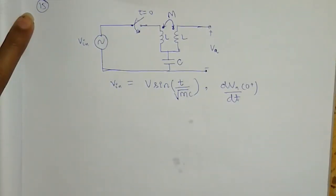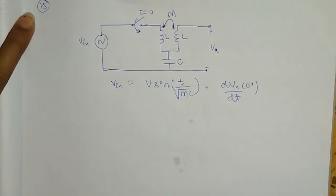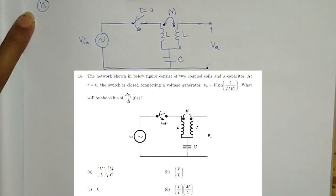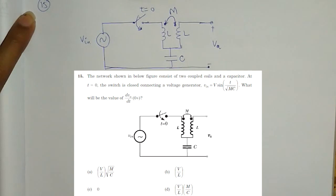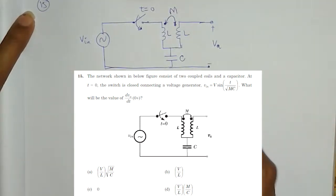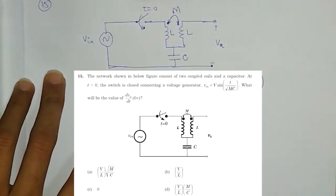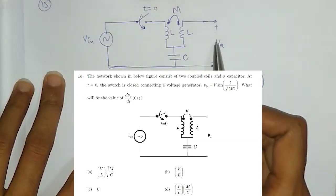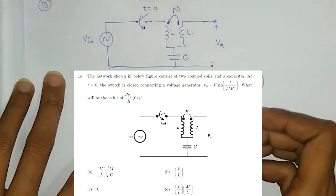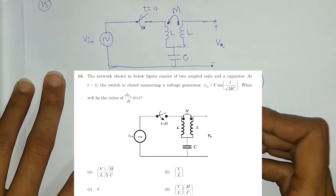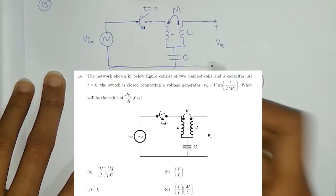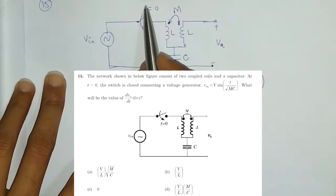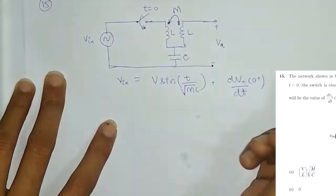Hello friends, welcome to GateGyan. In this question, we have given this network. The input is given as V sin(t) upon under root MC, where M is the mutual inductance. This leads to an inductor and the output is plus minus VA. We have to find dVA/dt at T equal to 0 plus, that is, at the instant when the switch is closed.